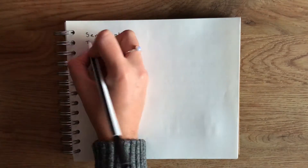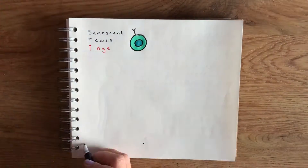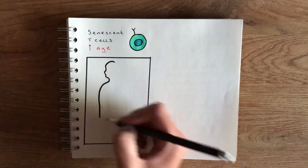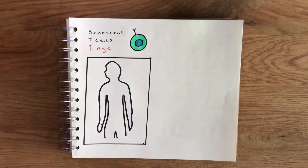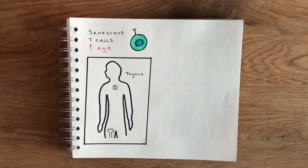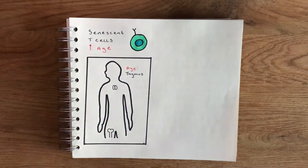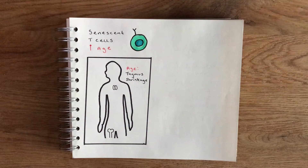Senescent T cells have been shown to significantly increase with age, in part because during T cell development our T cells migrate out of the bone marrow where they first originate and into the thymus in order to mature. However, as we age our thymus shrinks, which leads to a decrease in the number of new naive T cells. This means you end up with the majority of your T cells being terminally differentiated senescent cells, which become much harder to activate and also become much more inflammatory even under normal basal conditions.